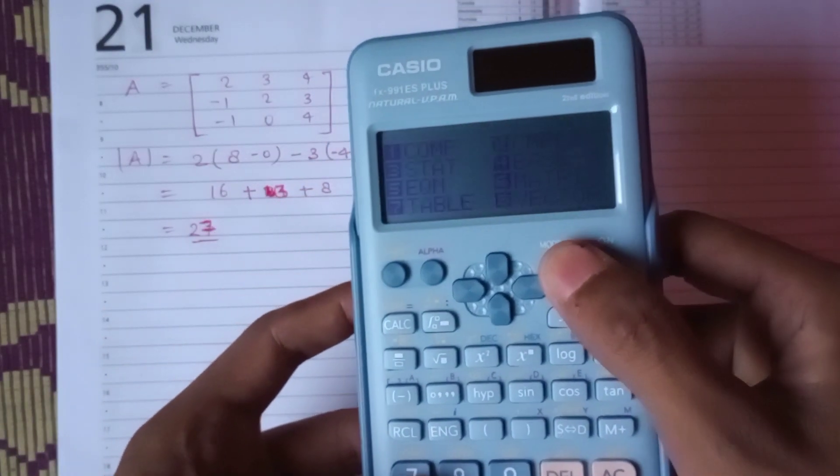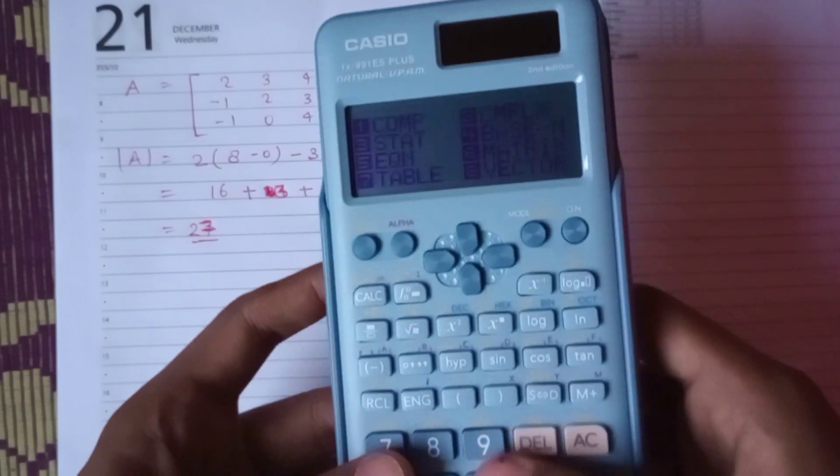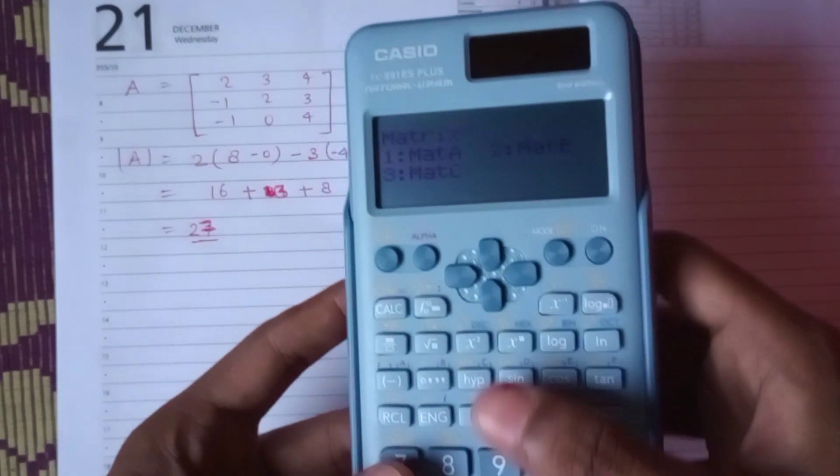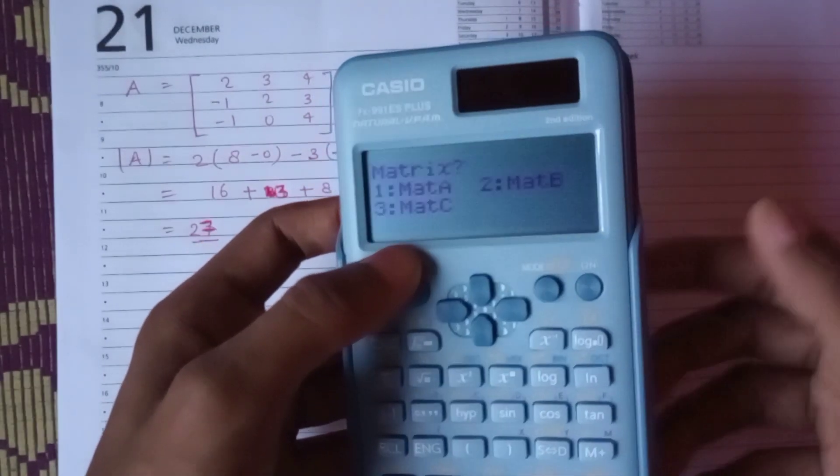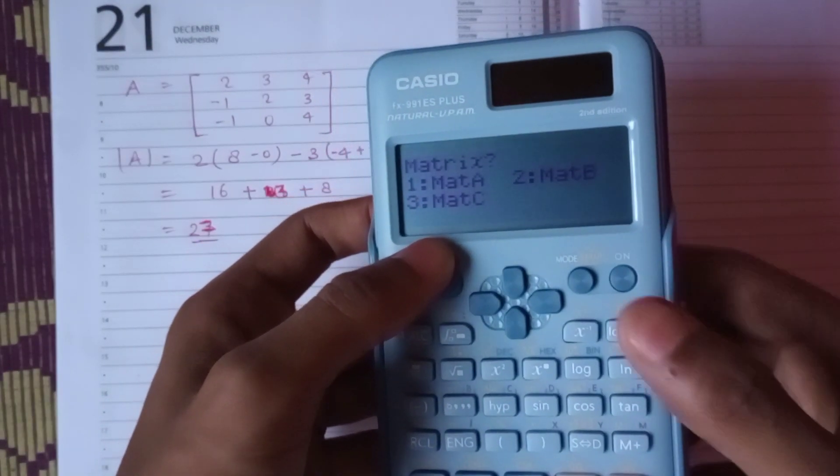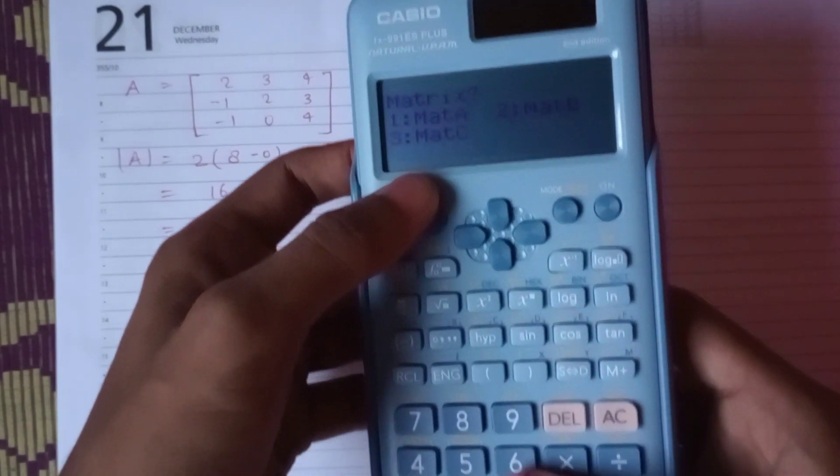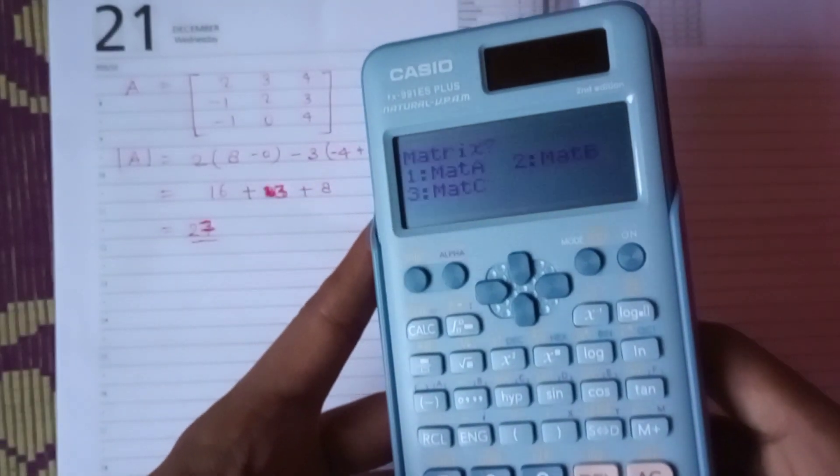Here it is Matrix, that is six. Just press six, and you have to choose which matrix you want to input. I'll choose A1, that is one.